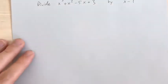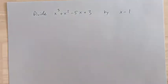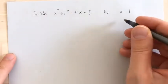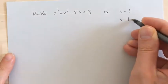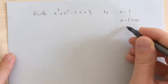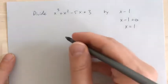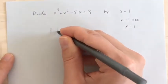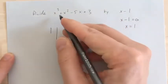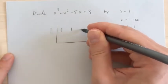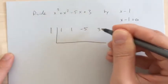So let's have a problem real quick. Divide x cubed plus x squared minus 5x plus 3. I'm going to do this by synthetic division because it's pretty quick. So the first thing I'm going to do is set this equal to 0 and solve for that. Add 1 to both sides, so that's going to be 1. So I'm going to put the 1 here, take my synthetic bar, and write the coefficients down: 1, 1, negative 5, and 3.